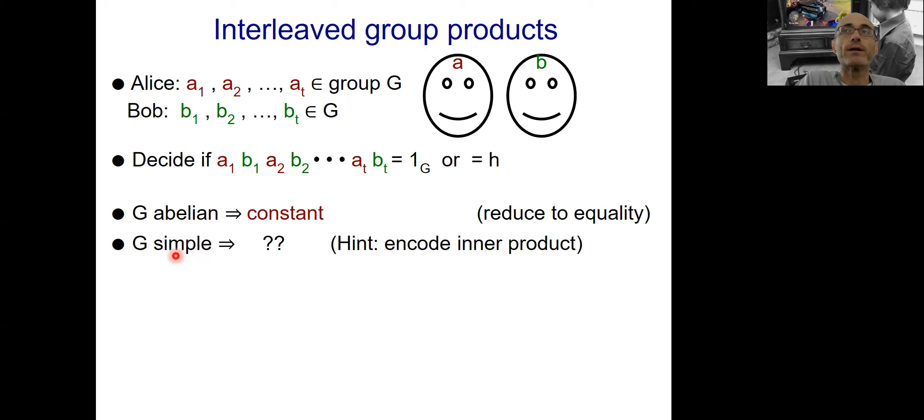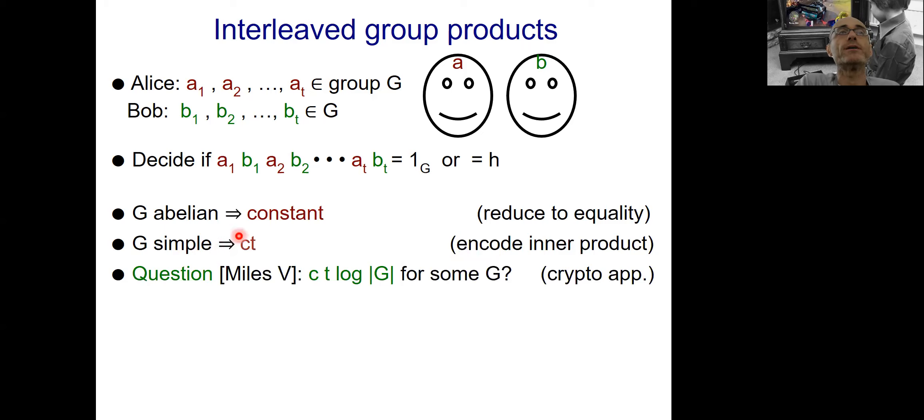Now, what if the group is a harder type of group, like a so-called simple group? And as a hint, here you can encode inner product. And in this case, the communication becomes linear. So they will need a constant times t. And this looks a strong bound, but if you think about it, it doesn't depend on the size of the group. I can have a super large group, t can be fairly small, a constant, compared to the group, and you will get nothing. And the question that was raised with Miles, another former student of mine, was whether you can actually prove the tight bound, which would be a constant times t, the length of the tuple, times the representation size of the group, which is log the size of the group, at least for some group. And this was motivated by some cryptographic application, which I'm not going to discuss now.